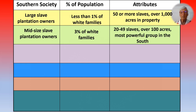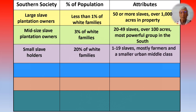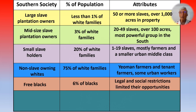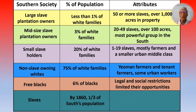Mid-sized slave plantation owners were 3% of white families — they had between 20 and 49 slaves and over 100 acres, and became politically the most powerful group in the South. Small slaveholders were 20% of white families, with 1 to 19 slaves, mostly farmers and a smaller urban middle class. Adding those up — 20 plus 3 plus 1 — only 24% even had one slave. Non-slave-owning whites were 75% of white families: yeoman farmers, tenant farmers, and some urban workers. There were some free blacks — about 6% of blacks — but legal and social restrictions limited their opportunities. By 1860, one third of the South's population were slaves, with the majority working on large plantations.